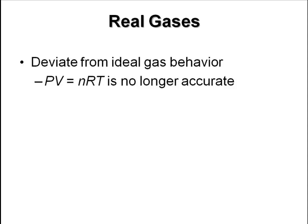Now that we've been talking about ideal gases, we can always assume that something's an ideal gas. If it's not an ideal gas, it would fit into what's known as real gases. Most of the time the gases obey the ideal gas law, but real gases do not - they deviate from ideal gas law behavior. PV = nRT is no longer accurate with real gases.